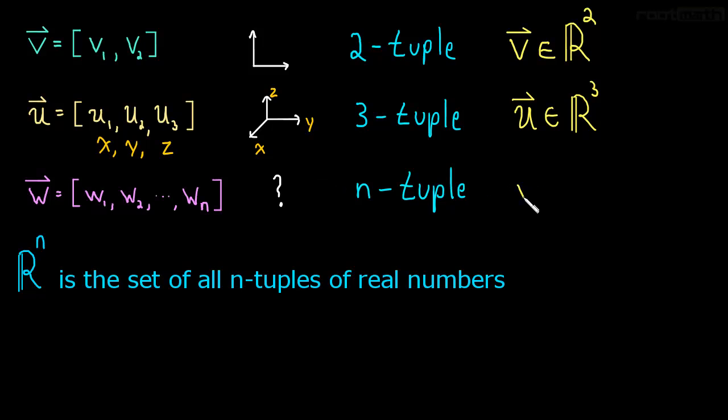w, similar to the rest, is an element of R^n. R^n is the set of all n-tuples of real numbers. w is an n-tuple of real numbers. So it's in R^n. w is an element of R^n.